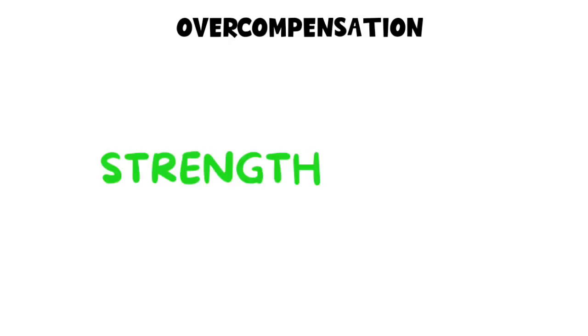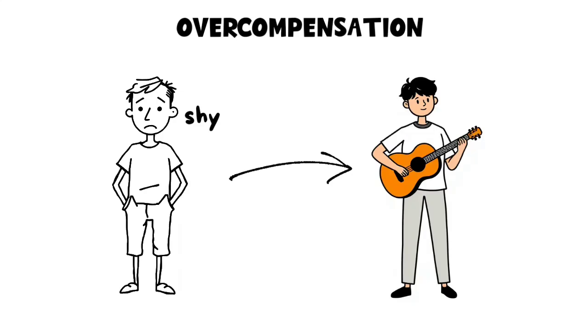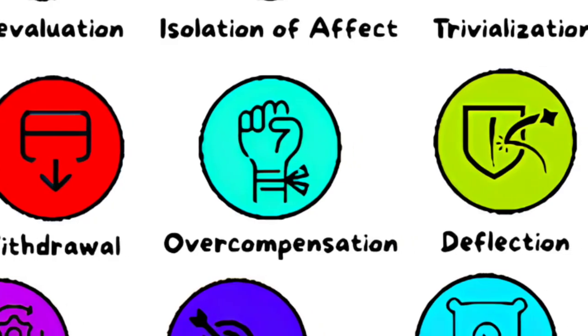Overcompensation. Overcompensation happens when someone exaggerates a strength to cover up a weakness. A shy person might act overly confident in social settings to mask their insecurity.